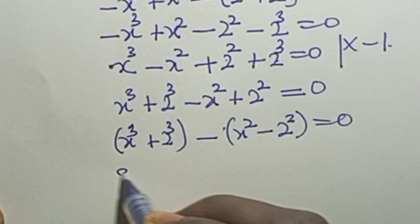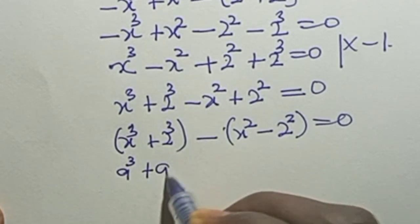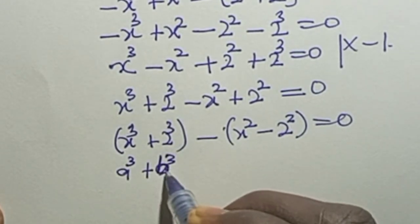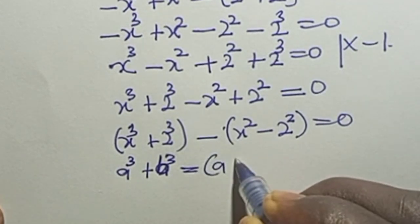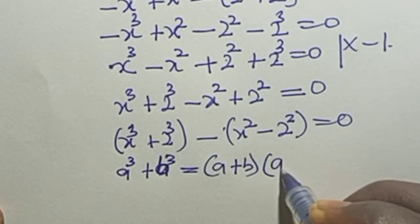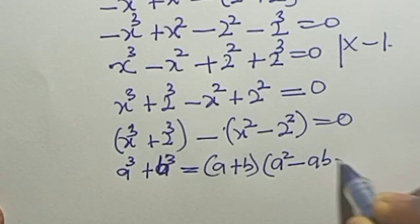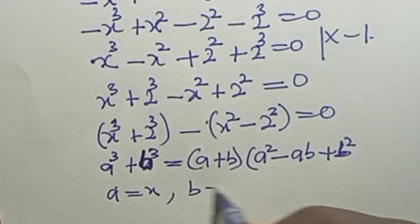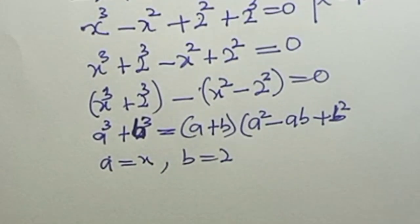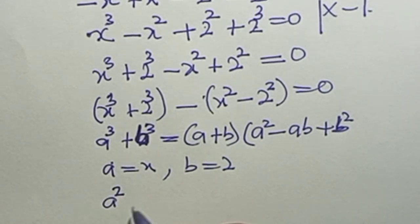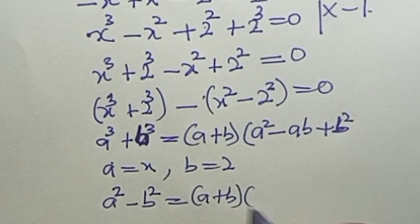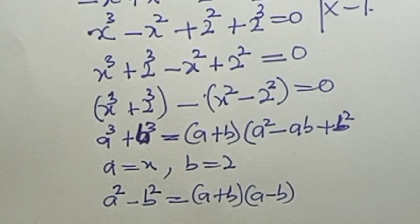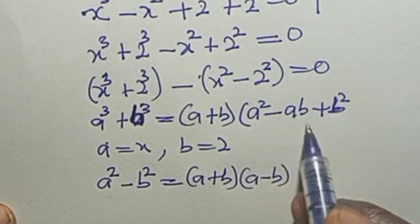We recall two algebraic identities: A cubed plus B cubed equals (A + B)(A squared minus AB plus B squared), and A squared minus B squared equals (A + B)(A minus B). Our A is s and B is 2. These identities will help us factor the equation.